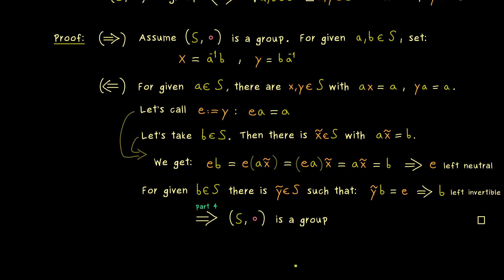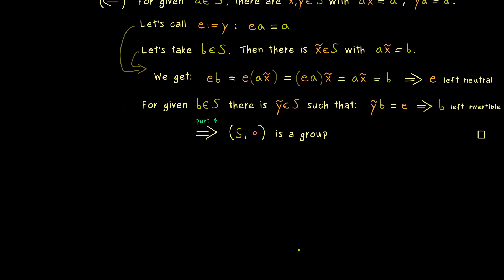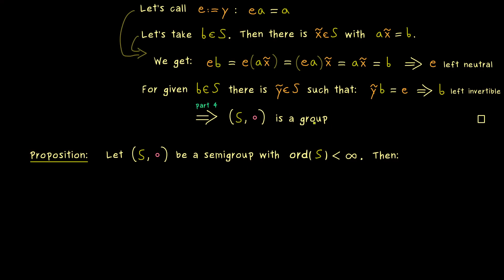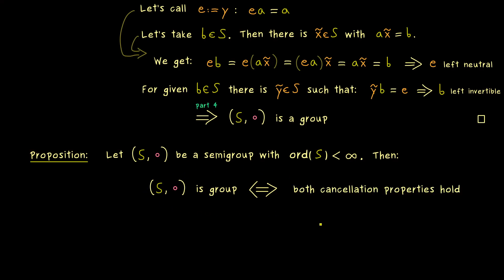Now we can use these facts to connect them to the cancellation properties. The following proposition is the main result of this video. We need just a semi-group, but it has to be of finite order — symbolically, ord(S) < ∞ — meaning our semi-group only has finitely many elements. Such a finite semi-group is an actual group if and only if both cancellation properties are satisfied: the left cancellation property and the right cancellation property. Both are satisfied in every group, but the claim is that this also works the other way around — having these two implications for all elements implies the existence of an identity element and all inverses.